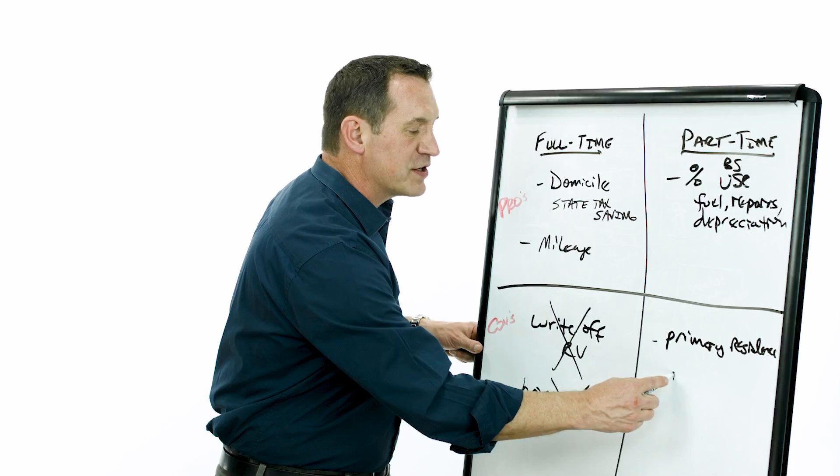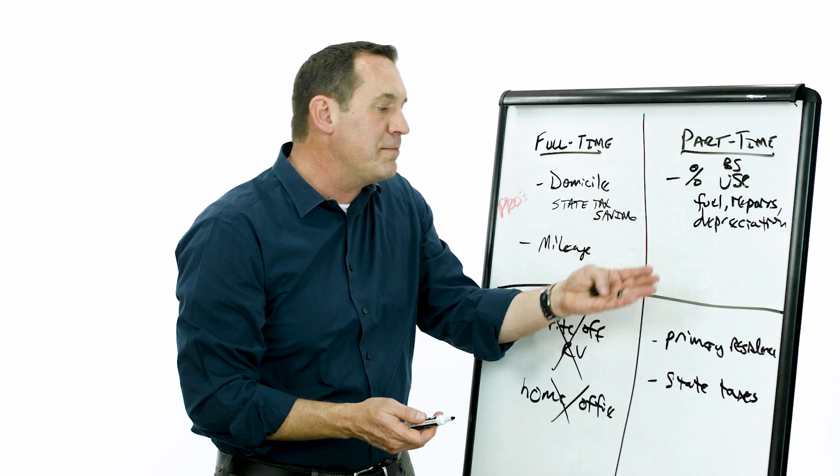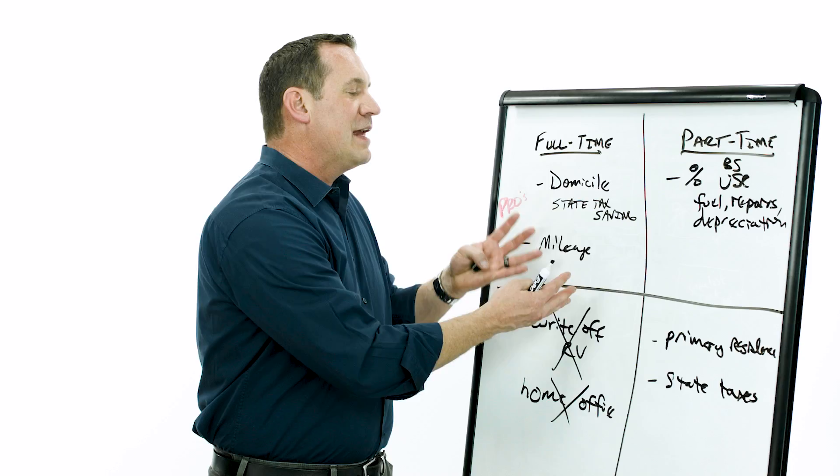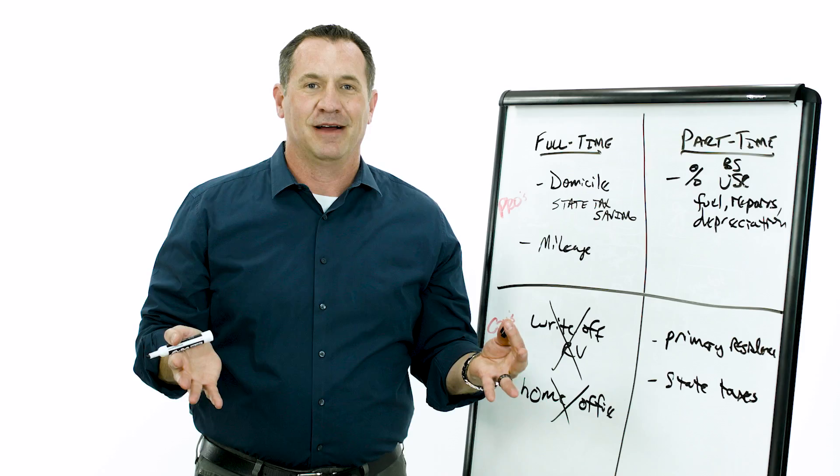Also a problem for state taxes because you may not be able to move domicile. So you get to write off the RV, but I'm still stuck in my state to pay taxes over here. I get to move my domicile and save on state taxes and write off my mileage, but I don't get to write off the RV and the home office disappears. So again, there's pros and cons, and what you want to find out is where's the RV fit best for you in your lifestyle?